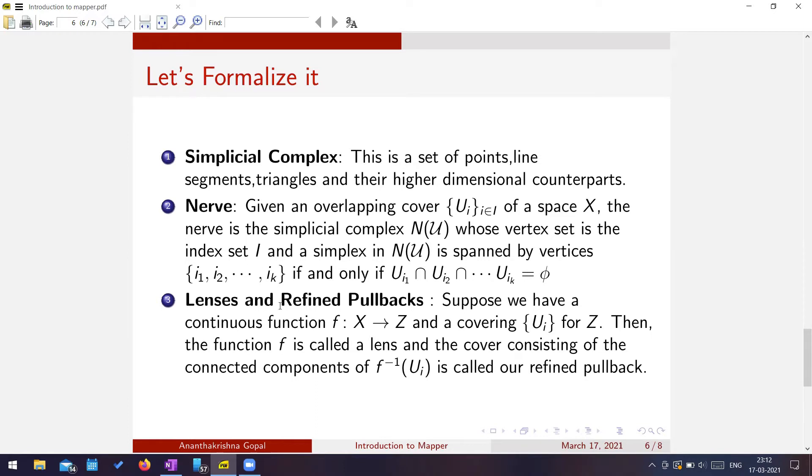Next, we look at what are lenses and refined pullbacks. Suppose we have a continuous function f from X to Z. X is the space where I have all my points. Z is called my parameter space. And I have a covering {Ui} for Z. So f is called a lens function. F is continuous.